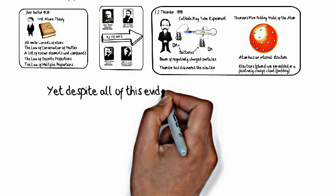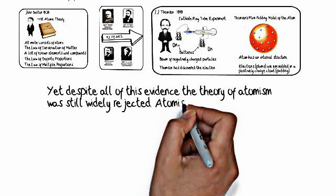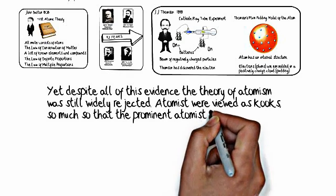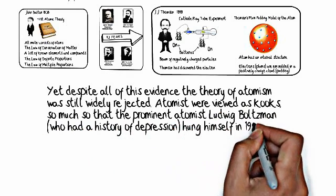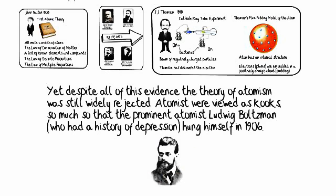Despite all the evidence going from 400 BC all the way through JJ Thompson and somewhat beyond him, despite all this evidence the theory of atomism is still widely rejected. Atomists are viewed as kooks so much so that the prominent atomist Ludwig Boltzmann, who had a history of depression, kills himself in 1906. He is so depressed over the fact that his theories are not being accepted and that he is viewed as someone who is not legitimate in science.